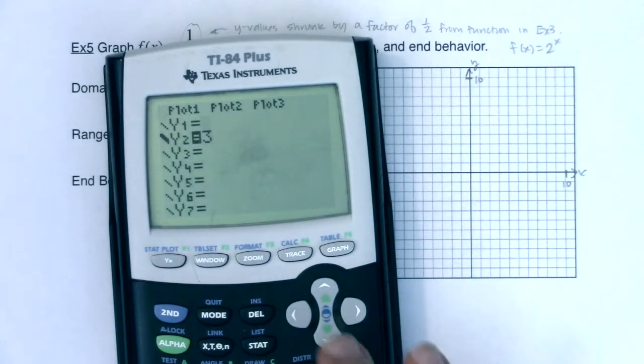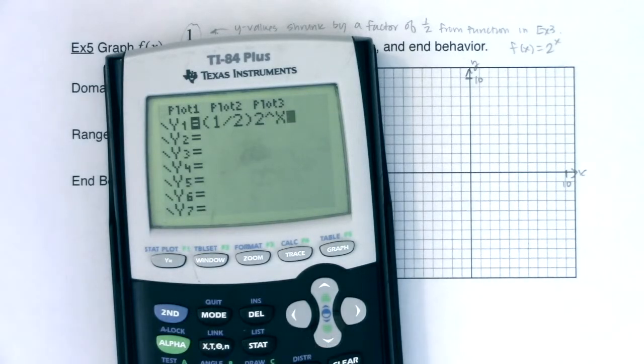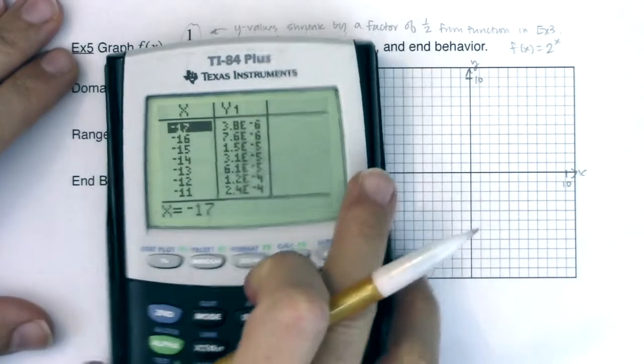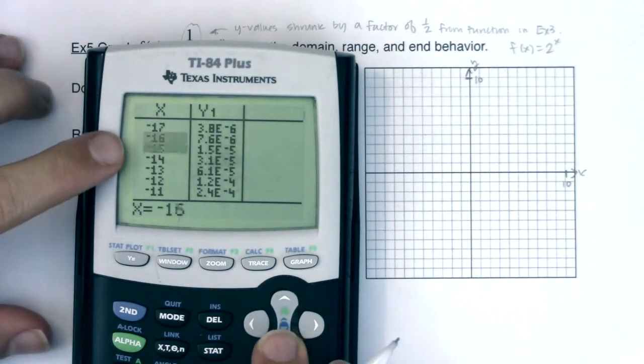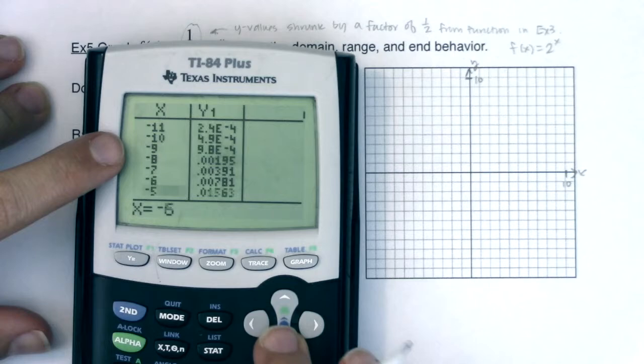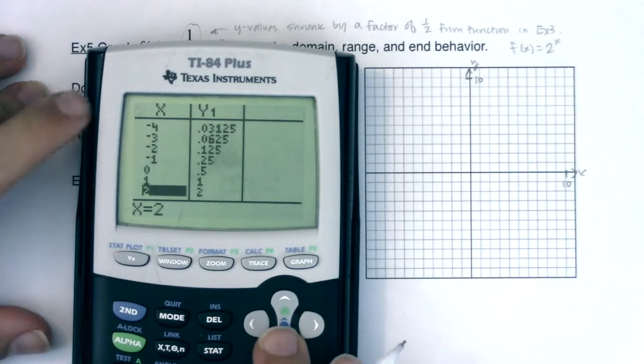So let me clear these out. And let's put in, I'll put 1 half in parentheses. And then we will multiply that by 2 to the x. I'm going to go to my table and get some ordered pairs. Let me scroll. We should get some numbers. There they are.